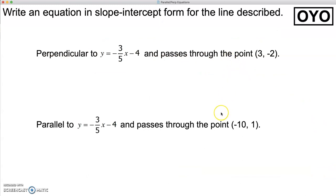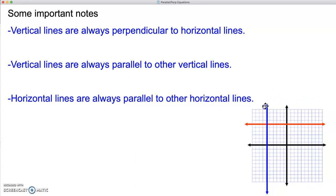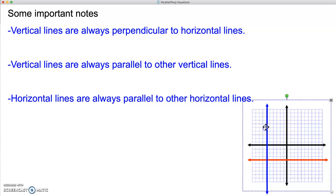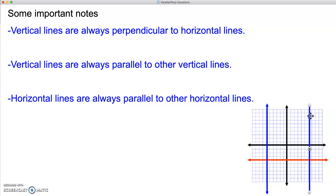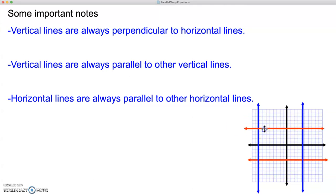I want you to try these two on your own. Next, we have some important notes about vertical and horizontal lines. Vertical lines are always perpendicular to horizontal lines. A vertical line will always be parallel to another vertical line, no matter where it's moved. It works the same for horizontal lines — any horizontal line will always be parallel to another horizontal line.